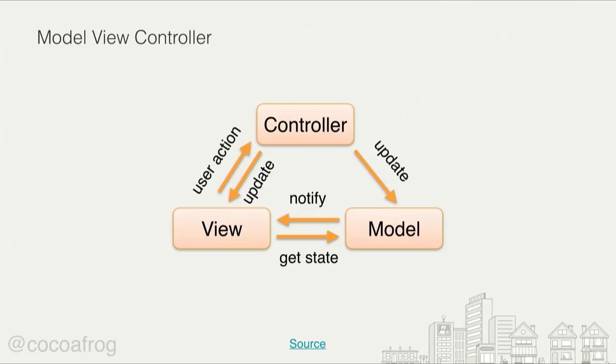In the original MVC, the view gets data from the model and the model notifies the view when it changes. The view sends actions to the controller, and the controller can update both the view and the model — which sounds a bit messy, because everyone is talking to everyone else. That's not really understandable or manageable.